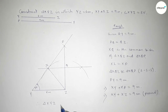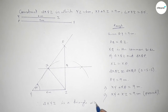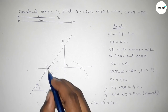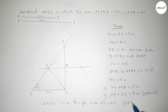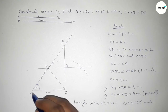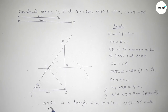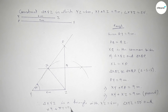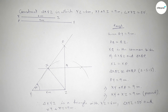Therefore triangle XYZ is the required triangle in which YZ equals 6 centimeter, XY plus XZ equals 9 centimeter, and angle XYZ equals 50 degrees. That's all. Thanks for watching. If this video is helpful to you then please share it with your friends. Please like, share and comment.